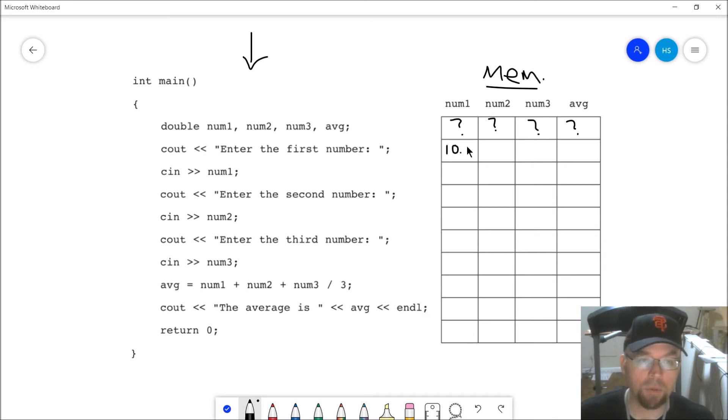Then the next line, 'enter the second number', goes on the screen. Doesn't impact my memory. Cin num2 - let's say the user typed in 20. How does my memory change? Well, we now know that 20 is stored there - 20.0 because the data type is a double for num2 also. Next line, 'enter the third number', user types in 30. That's 30.0 and that gets stored because num3 is a double also. Then we get down to this line right here.